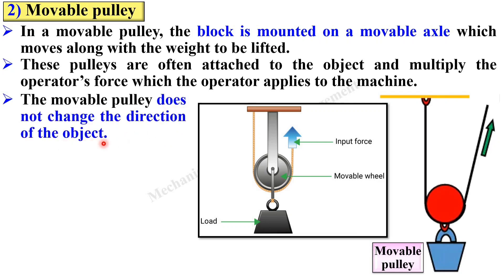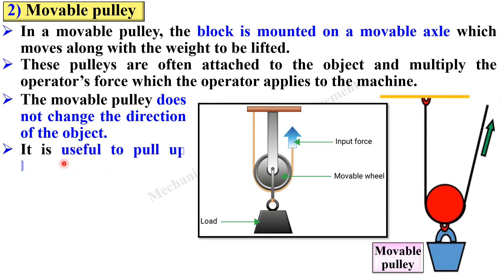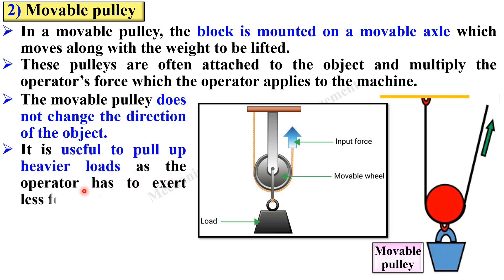The movable pulley does not change the direction of the force — as we discussed in the case of the fixed pulley, the direction of the force is redirected, but in the case of the movable pulley it does not change the direction. If you apply the input force in the upward direction, then the load will also move in the upward direction. It is useful to pull up heavier loads as the operator has to exert less force. Here you apply less force and can lift a heavy load with the help of the movable pulley.